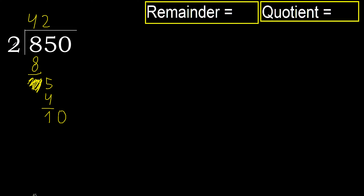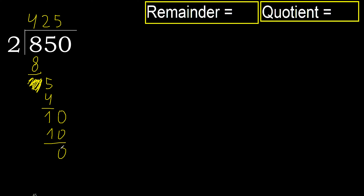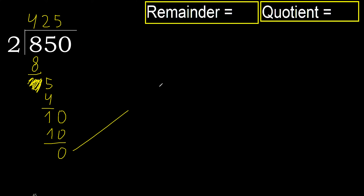10. 2 multiplied by 5 is 10, which is not greater. Subtract. Next — there is no number, therefore finish it.